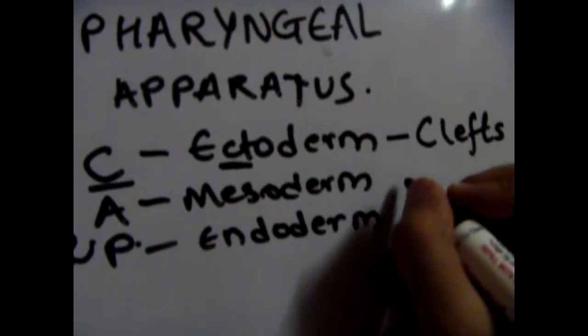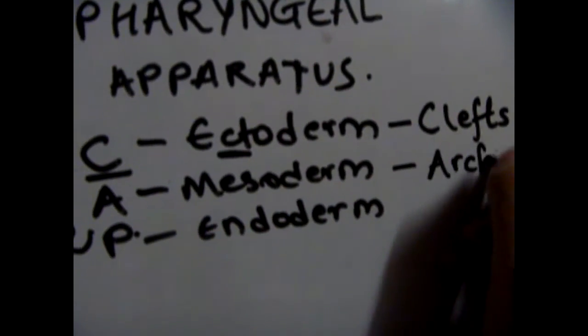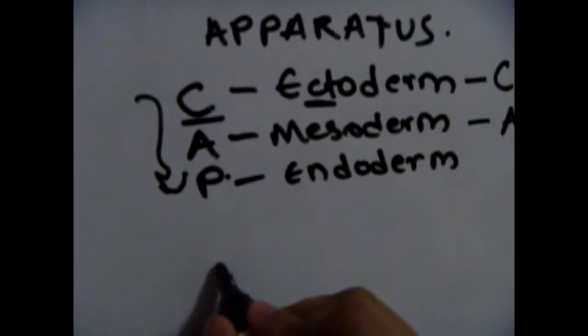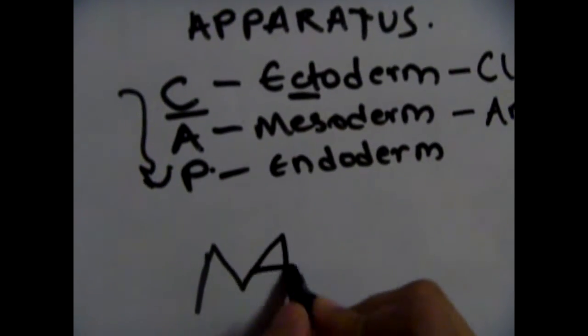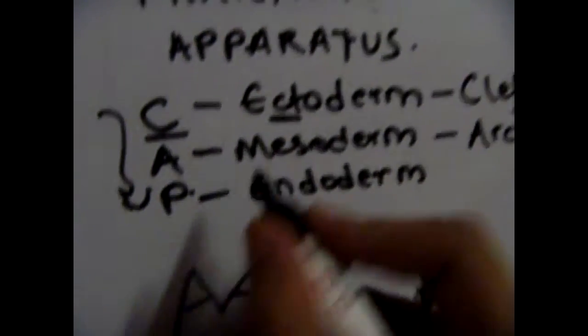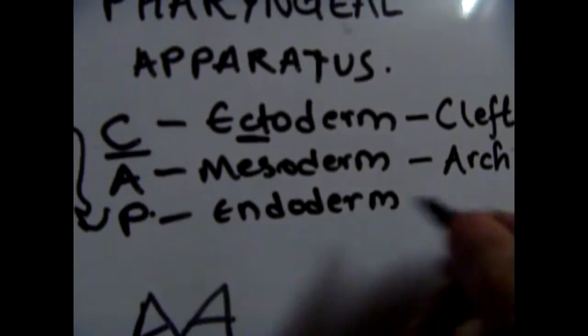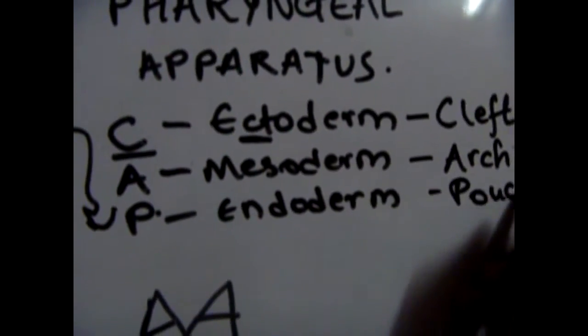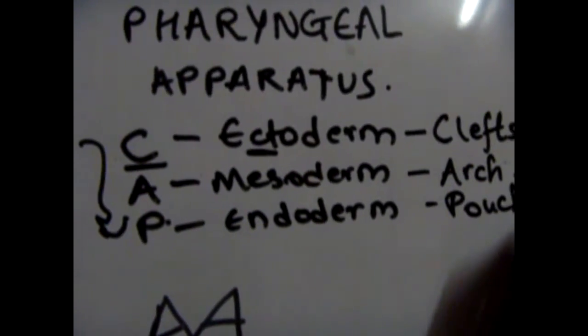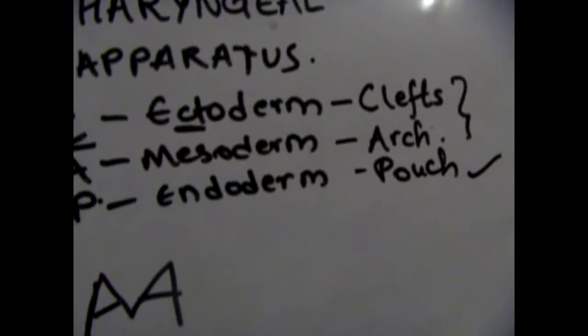A is for mesoderm, which A stands for arch, and the way you can remember this is M kind of looks like two A's joined together, so that's easy to remember. And P is for pouch, so if you remember these two, you can remember pouch as well.